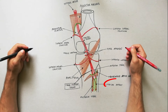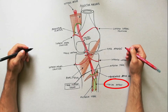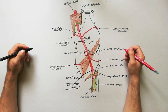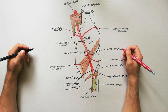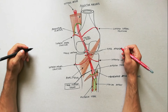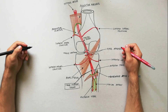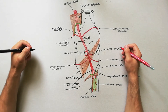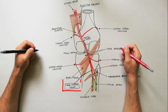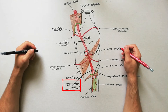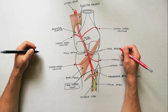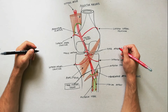The fibular artery typically arises from the posterior tibial artery. Therefore, the posterior tibial artery proximal to the fibular artery origin is sometimes called the tibial fibular trunk, and it could be said that the popliteal artery bifurcates into the tibial fibular trunk and anterior tibial artery.